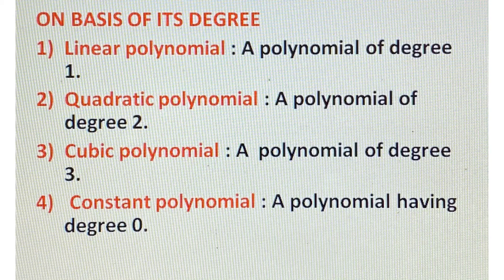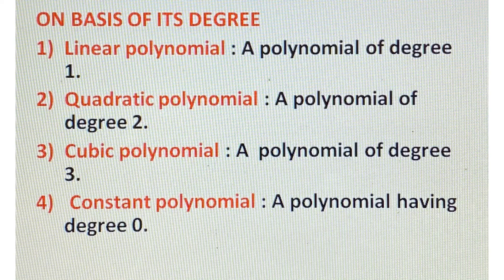On the basis of degree: a linear polynomial is a polynomial of degree 1; a quadratic polynomial is a polynomial of degree 2; a cubic polynomial is a polynomial of degree 3; and a constant polynomial is a polynomial of degree 0. So on the basis of degree, polynomials are categorized as constant, linear, quadratic, and cubic polynomials.